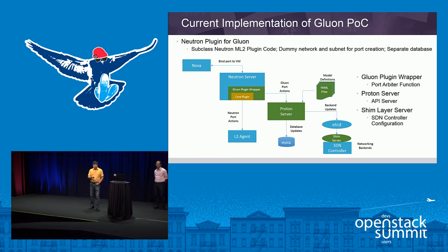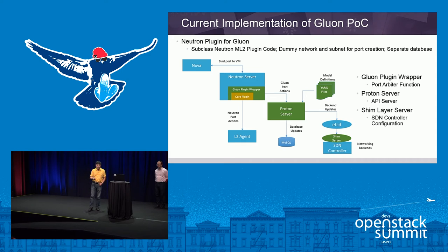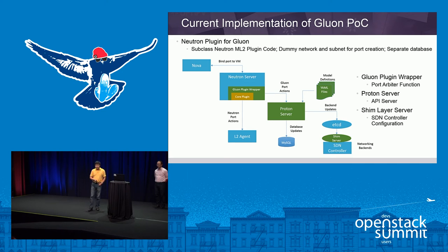The Gluon plugin wrapper handles the port functions in the Proton service API server. The shim layers handle all the different existing controller configurations, making sure all backends interoperate with each other and handle all related functions. The backend can support different types of existing controllers as well.